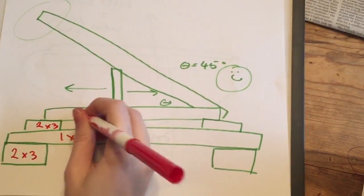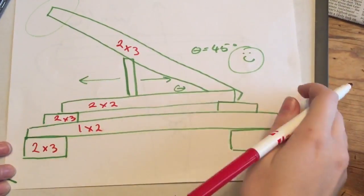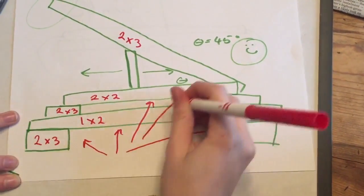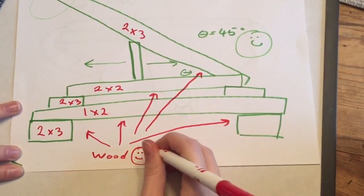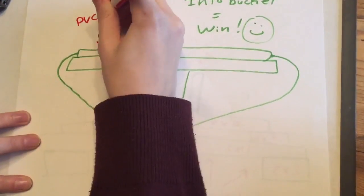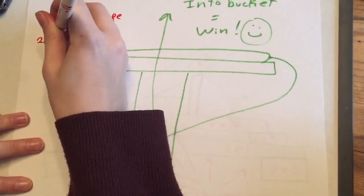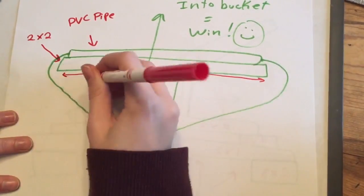We used wood to make everything, except for the bow we used a 34 inch PVC pipe and a plastic cup and rubber tubing.